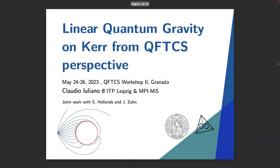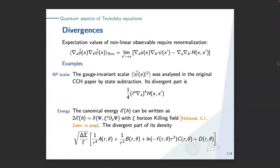Our original problem was to compute the canonical energy. One can prove that the canonical energy can be written in terms of the symplectic form, with one entry being the Teukolsky fields and the second entry being a directional derivative along the horizon Killing field χ. You then compute the divergent part of its density, which is given by coefficients A, B, C, D that we were able to compute. You see the standard quartic divergence, then quadratic divergence, logarithmic divergence, and a smoother remainder. You only have to subtract this structure to renormalize.